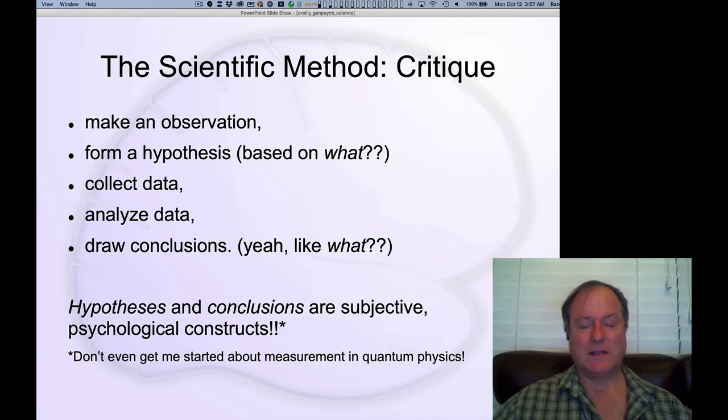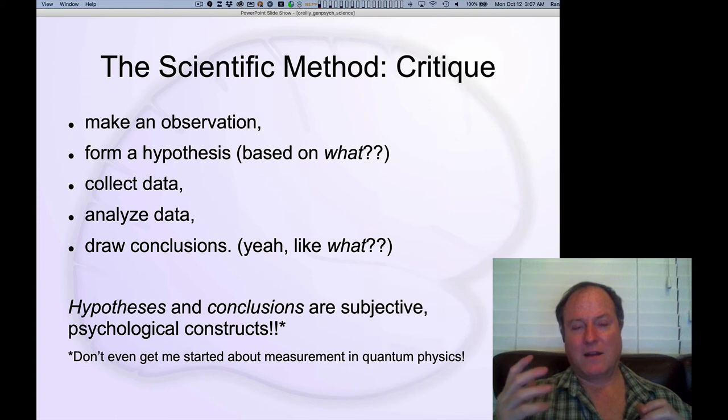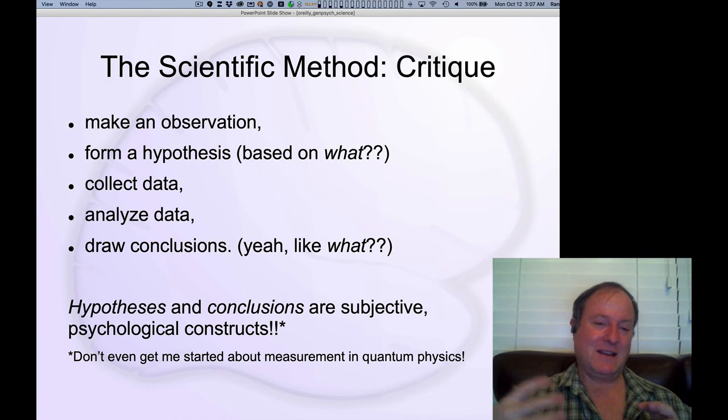So Robert Pirsig in Zen and the Art of Motorcycle Maintenance got too philosophical, thought about this a little too hard, and really was kind of dumbfounded by this subjectivity of the hypothesis itself. And how could science be founded in this objective understanding, be founded on something that's so subjective and so quirky? So then you go and collect the data, analyze the data. Everybody loves data.